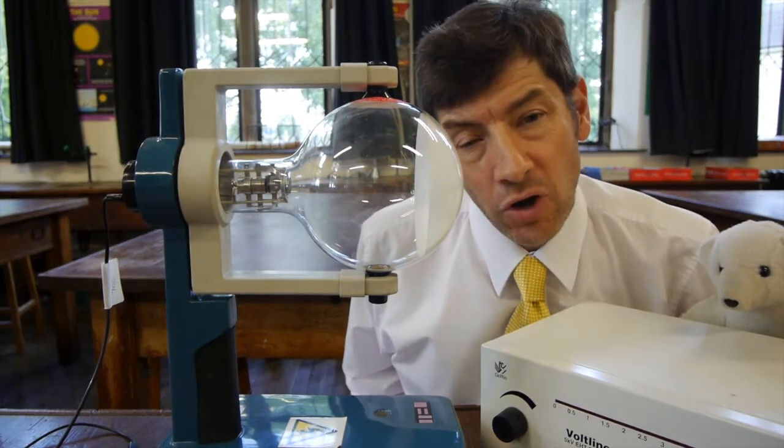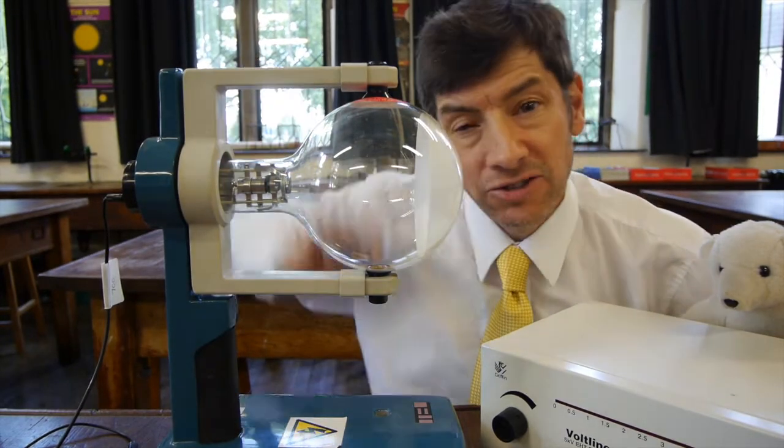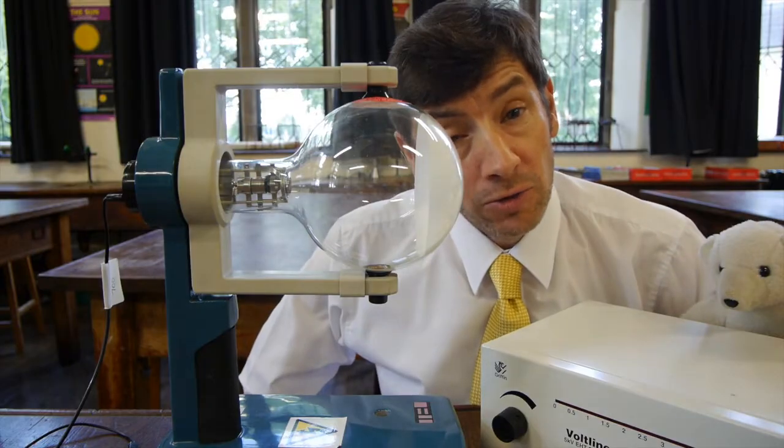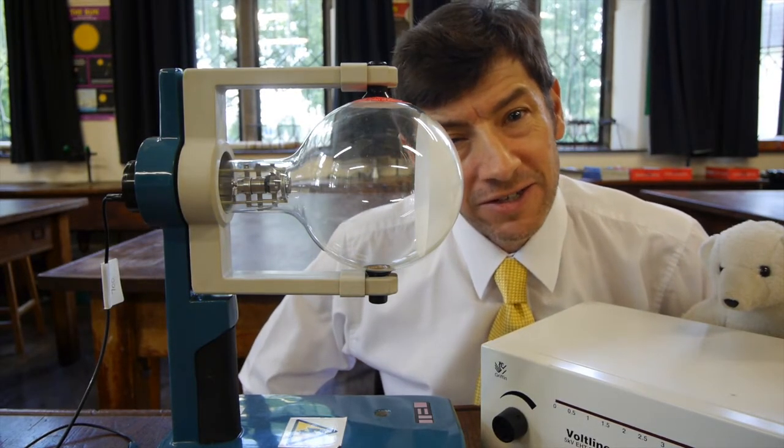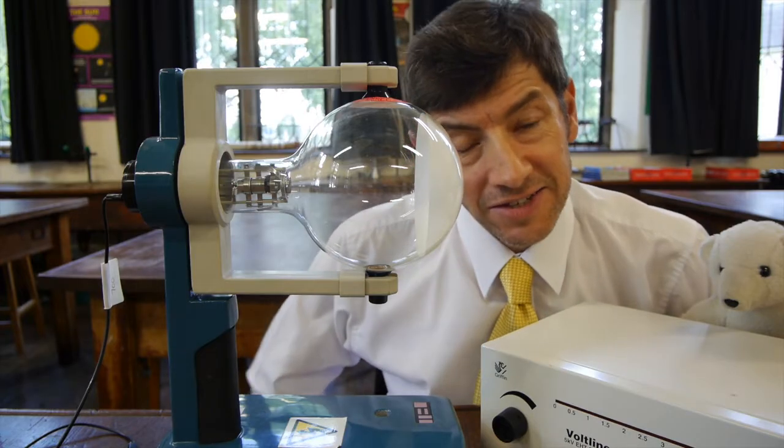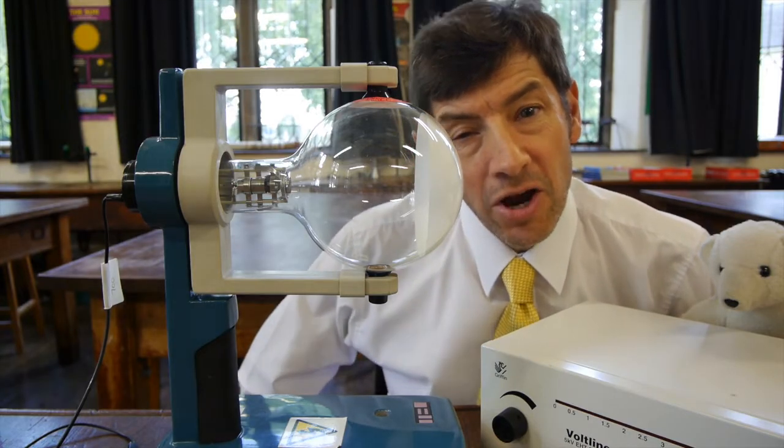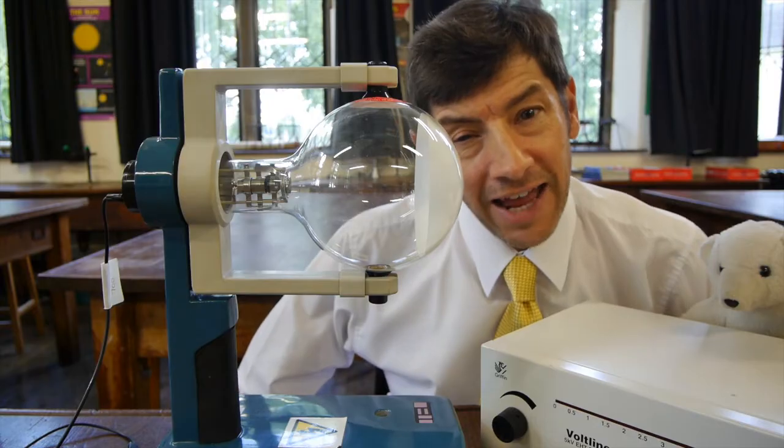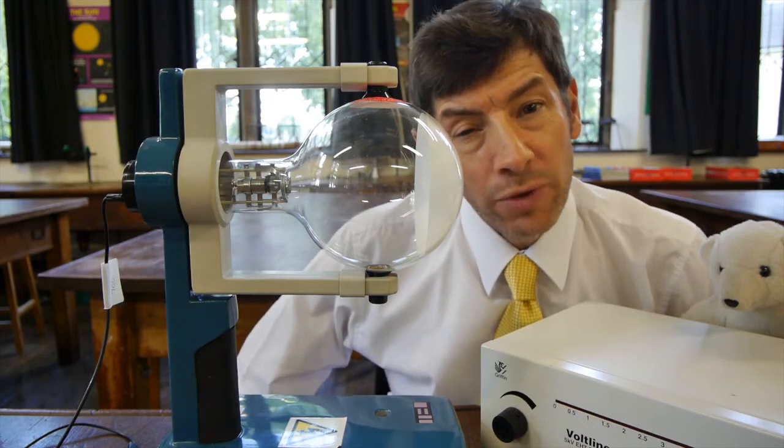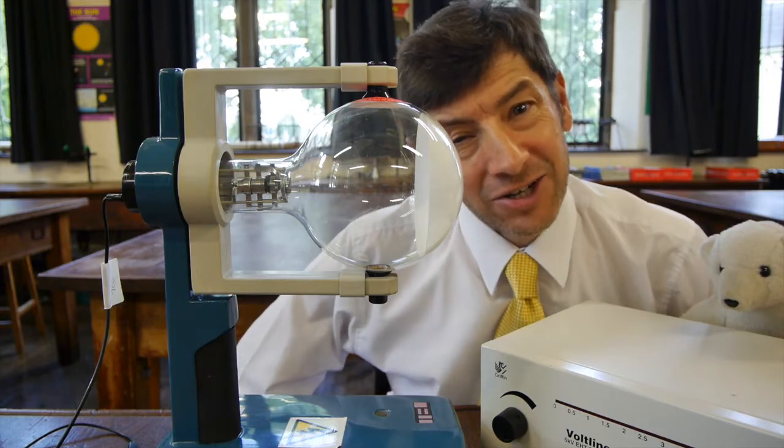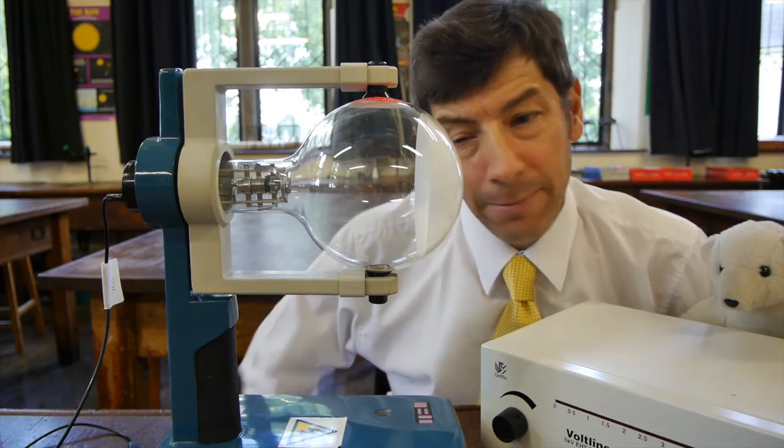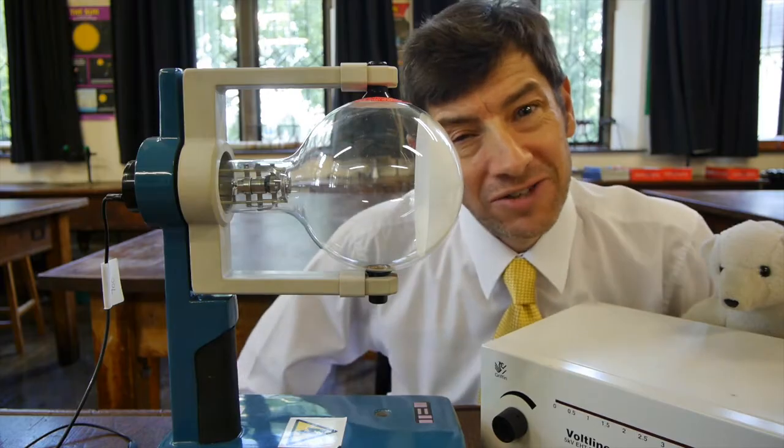But the one change we've got here is in front of the electron gun, I've got a sample holder and inside that is a very, very thin piece of graphite. Now, what that is, is a series of atoms of carbon regularly arranged in a lattice or in a crystal. And what we're going to do is fire individual electrons at that crystal lattice and see what happens on the fluorescent screen of the tube.